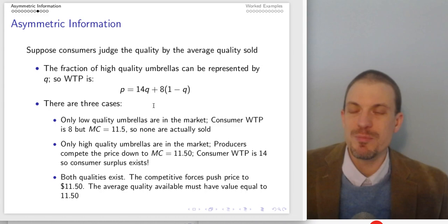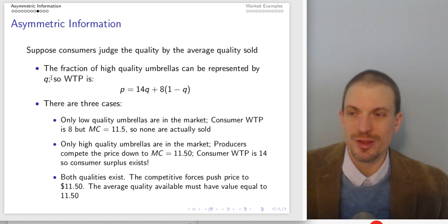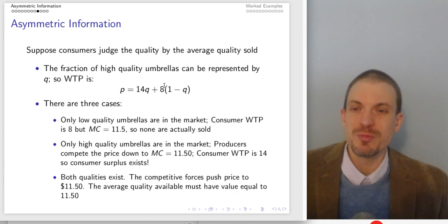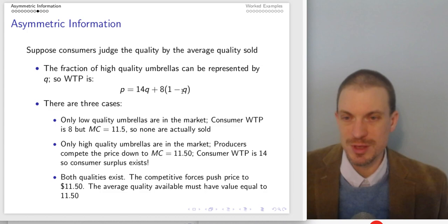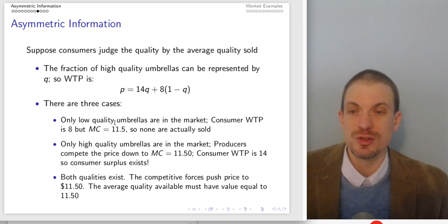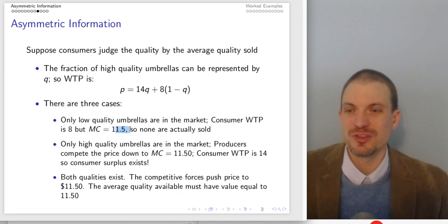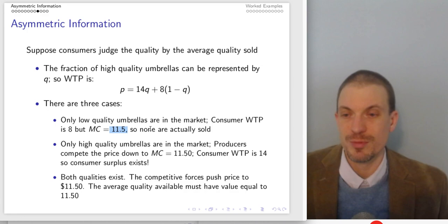There are actually three things that can happen. Consumers are judging quality by the average quality sold. We can represent the fraction of high-quality umbrellas by Q, so their willingness to pay is P = 14Q + 8(1−Q). The first case: only low-quality umbrellas are in the market. In this case, nothing actually sells — consumers are only willing to pay $8, the marginal cost was $11.50, so there are no gains from trade and no reason to produce or sell umbrellas.